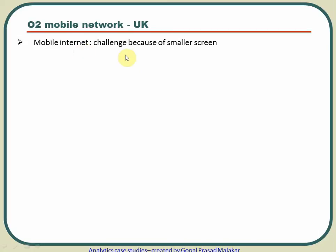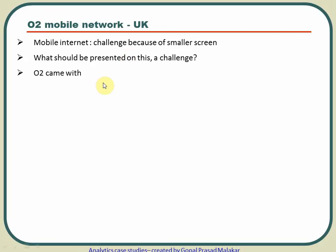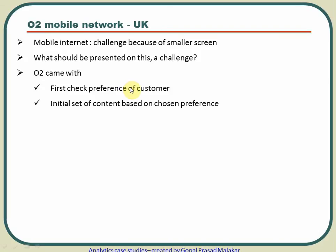There is a challenge with mobile internet: the screen size of a mobile is much smaller than a laptop, so the question is what content to present quickly and simply. O2's approach is to first check the preference of the customer — what they would like to see. If customers set their preferences, great; if not, default content is shown initially.